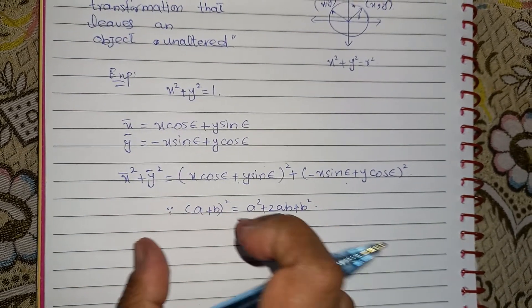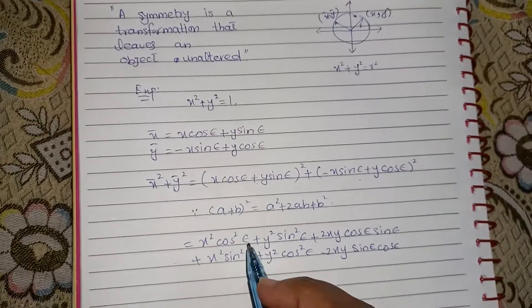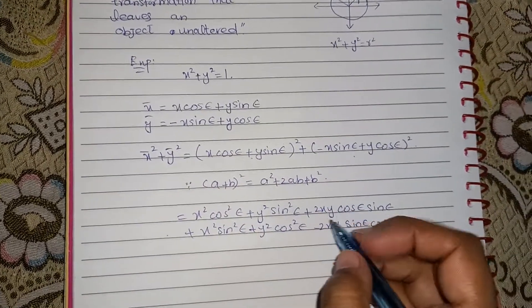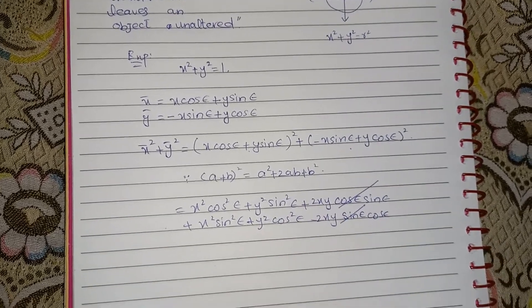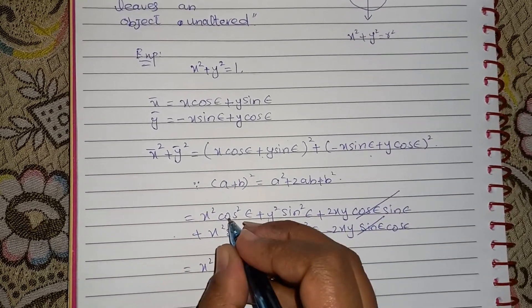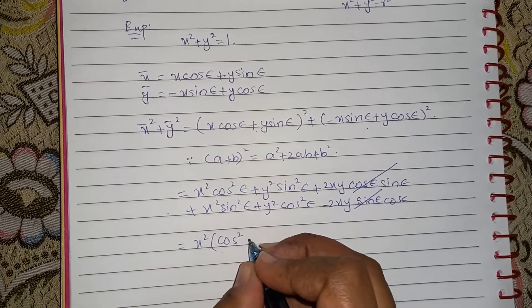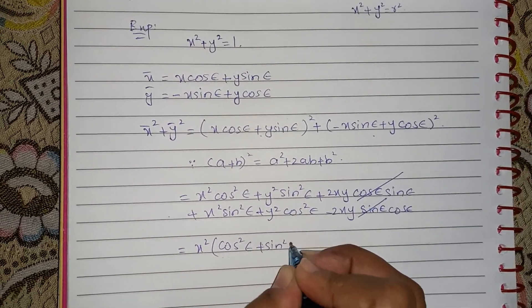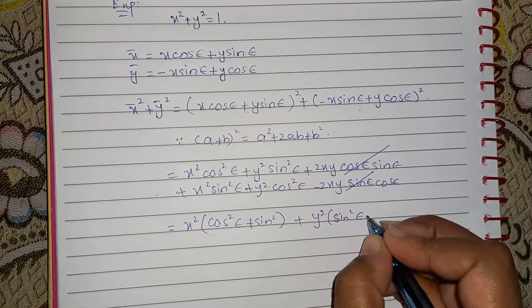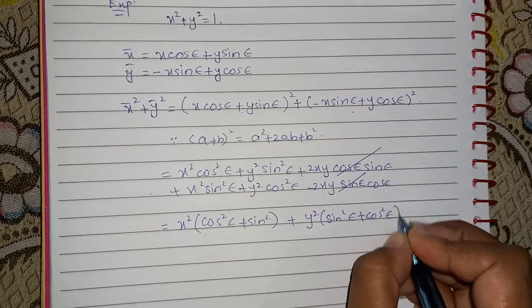So after simplifying, if we expand these two terms using this formula, then these two terms will cancel out with each other. And from here, if I take x² as common, then I will be left with cos² ε + sin² ε. And in the similar way, we can pull out y² as common and we will get sin² ε + cos² ε.